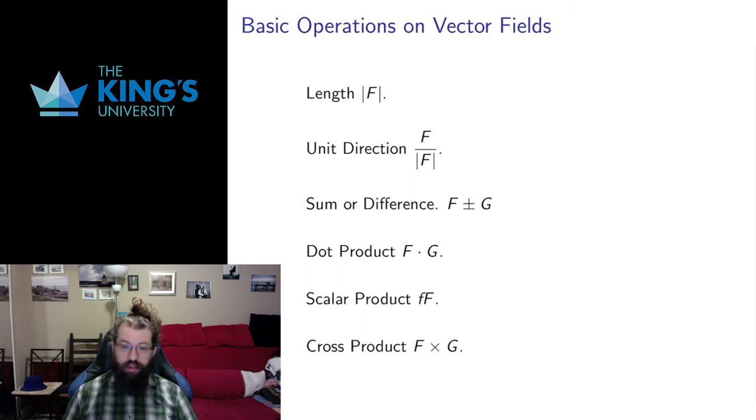So if I have a vector field F, I can look at its length. That's going to be the magnitude of the vector at each point. So that's going to be a scalar field, turning the vector into a scalar by just looking at magnitude. I can look at its unit direction, assuming that the force of the field F is never zero. So I'm not dividing by zero. But if the field F is never zero, then I can divide by its magnitude, and that will just give me a unit direction at every point. If all I care about is direction but not magnitude, this will give me a vector field of unit vectors assigned to every point.